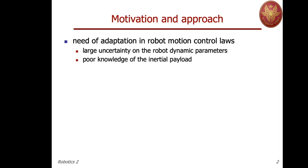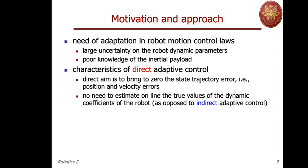The need for adaptation comes from essentially two aspects. There could be very large uncertainty on the knowledge of the actual value of the dynamic parameters and therefore the dynamic coefficients of the robot. Or, even if we have performed an offline accurate identification, there could be poor knowledge of the payload that the robot is holding during some part of the task.